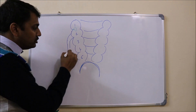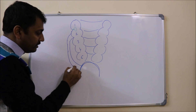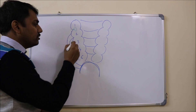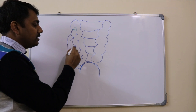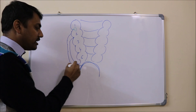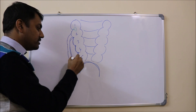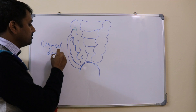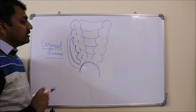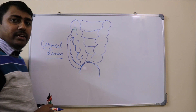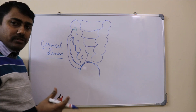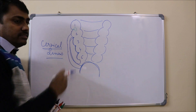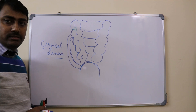The second pharyngeal arch overgrows the second, third, and fourth pharyngeal clefts, goes downward, and joins with the epicardial ridge to form a closed cavity. This cavity is formed by the second, third, and fourth pharyngeal clefts and is known as the cervical sinus.